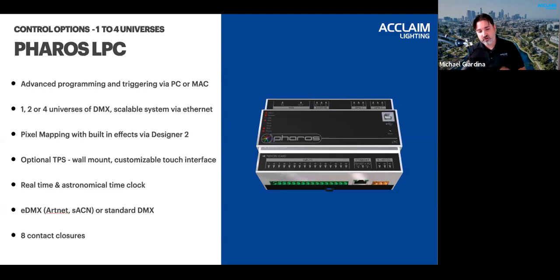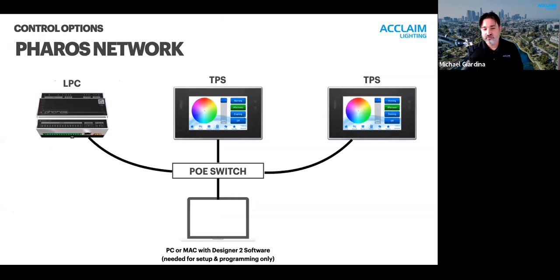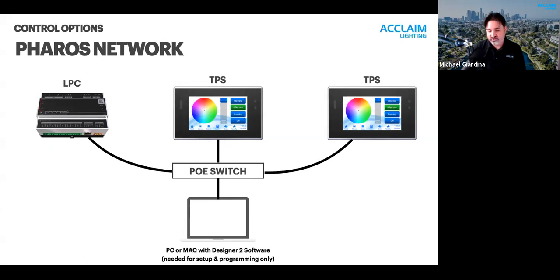A Pharos system can always be expanded and modified since the backbone is Ethernet. Like a typical computer network, Pharos uses a star topology linking everything back to a PoE switch. The Designer 2 software can see all devices on the network and assign them to various functions as needed in the system.